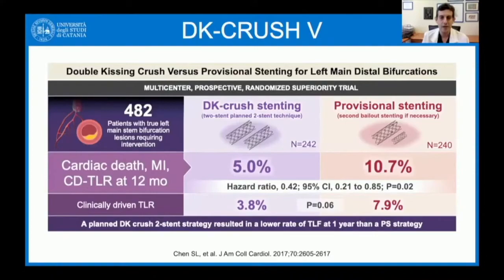DK Crush 5 included 482 patients with true left main stem bifurcation lesions requiring intervention. Patients were randomized to DK Crush stenting or provisional stenting. The primary endpoint was a composite of cardiac death, MI, and clinically driven target lesion revascularization at 12 months. Events were 5% in DK Crush versus 10.7% in provisional stenting, with a hazard ratio of 0.42 and p-value of 0.02. Clinically driven TLR was 3.8% versus 7.9% (p=0.06).